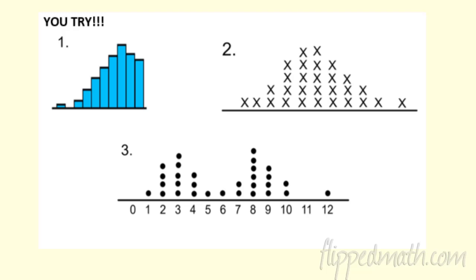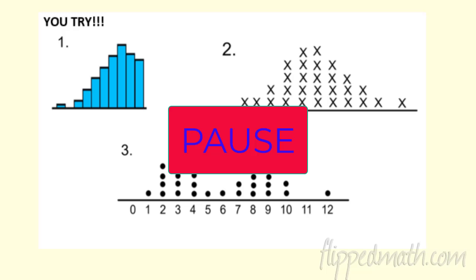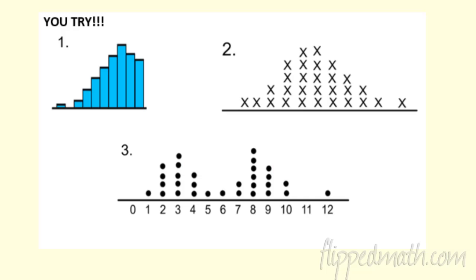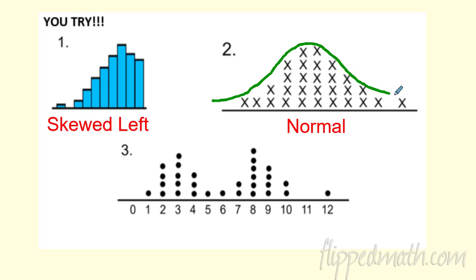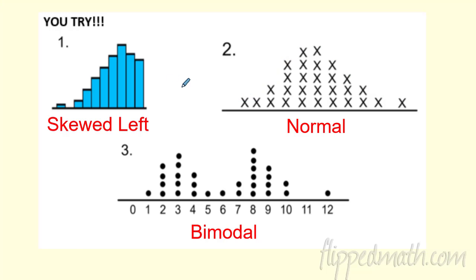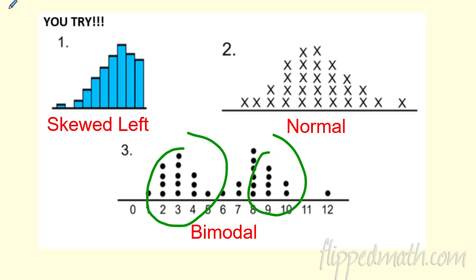Let's go ahead and practice. I switched it up from bar graphs to dot plots — see if you can fill these in. Try these real quick. Okay — I'd say the first one is skewed left, the small part's to the left. The second one looks pretty normal — it's not a hundred percent perfect, but it's got a nice normal mound bell-shaped curve to it. And the last one is bimodal — we've got groupings down here and definitely groupings up here.